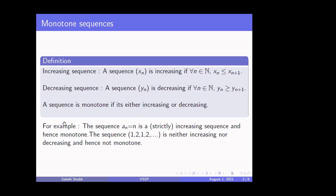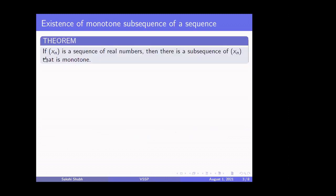Now that we have discussed what a monotone sequence is, let's go to our main theorem. The theorem says that if xn is a sequence of real numbers, then there is a subsequence of xn that is monotone. What we have to prove is that given a sequence xn, we can find one monotone subsequence. To find a subsequence, we need a strictly increasing sequence of natural numbers n1 < n2 < n3 < ... < nk and so on, and consider those terms xn1, xn2, xn3, with the additional condition that the subsequence is monotone.